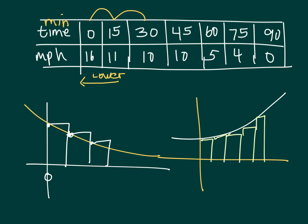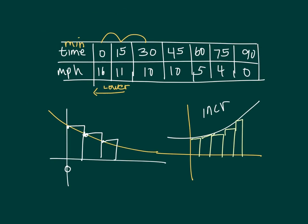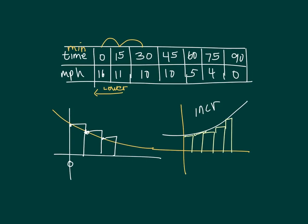Students will either memorize that if it's increasing then the first value in the table is used. If it's decreasing then you use the next value over. So in this case, if I want to find the first 30 minutes, the lower since this is decreasing would be...